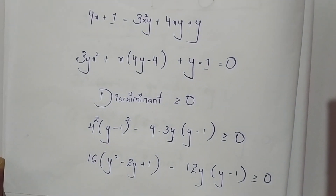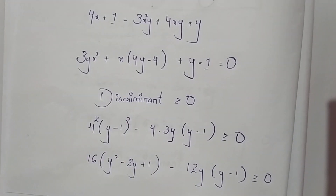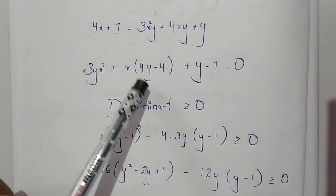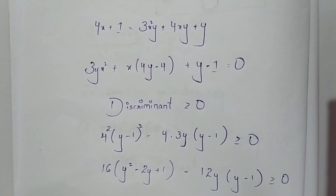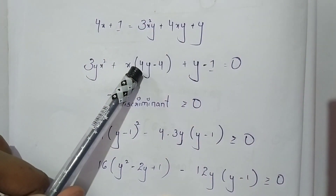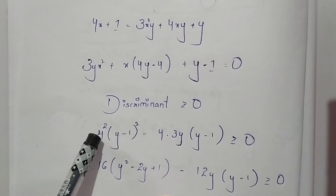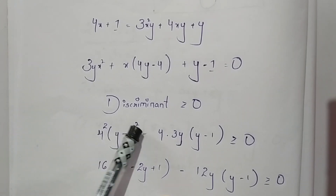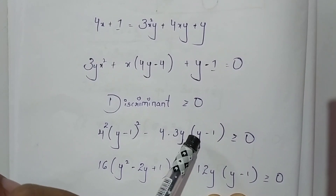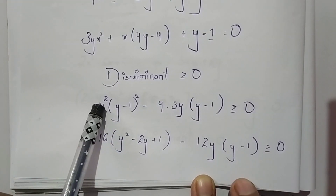Now consider that the discriminant value will be greater than or equal to 0. The discriminant is b² - 4ac. Here b = 4y - 4; taking 4 as common we get 4(y - 1), so b² = 4² × (y-1)² = 16(y-1)². And 4ac = 4 × 3y × (y - 1).